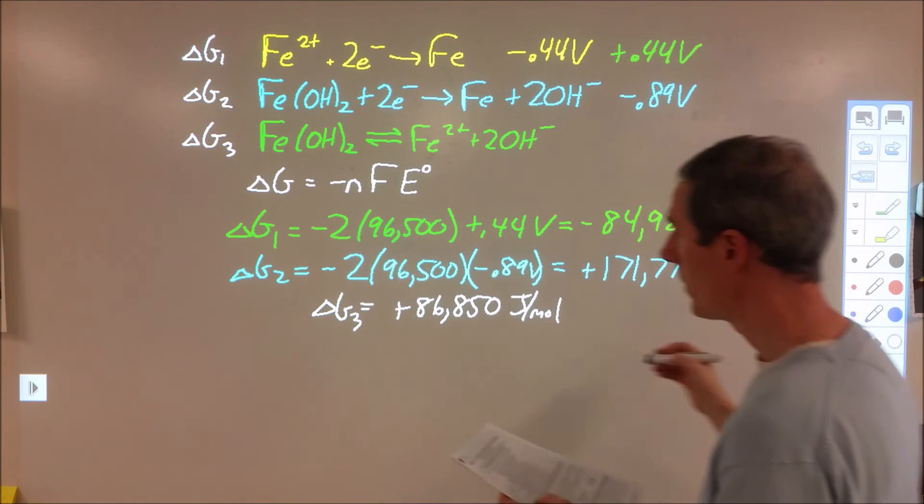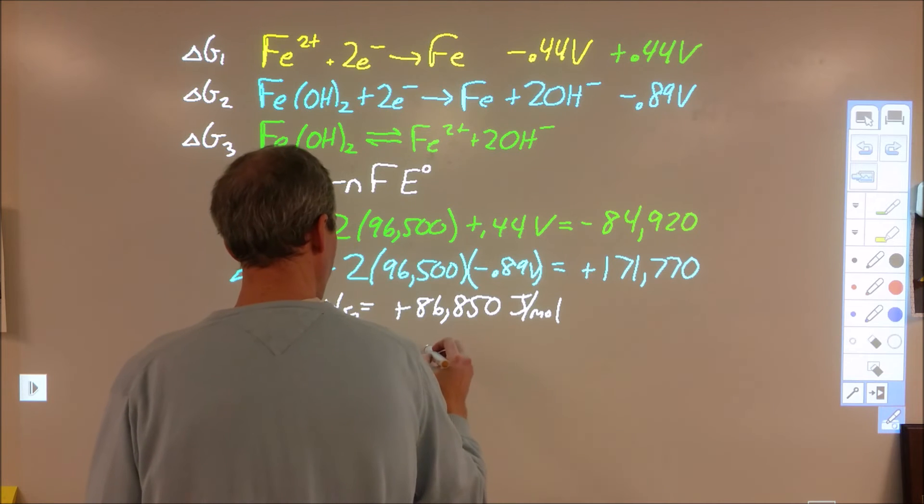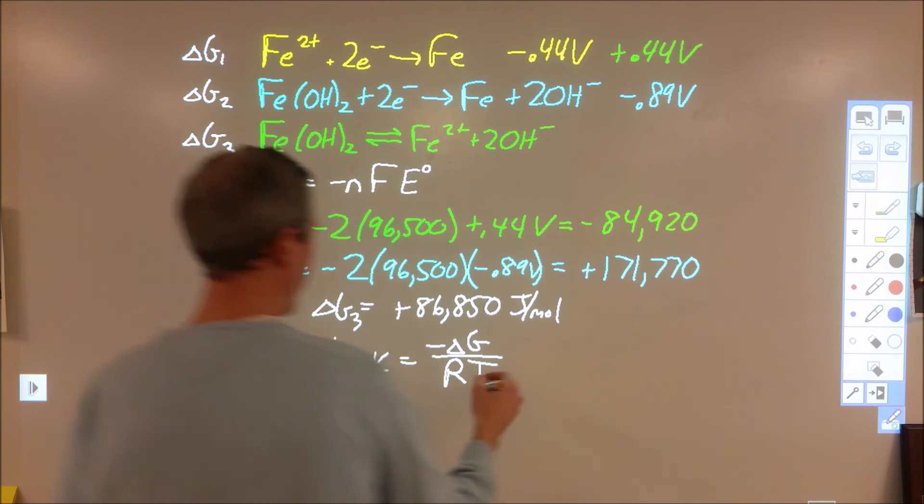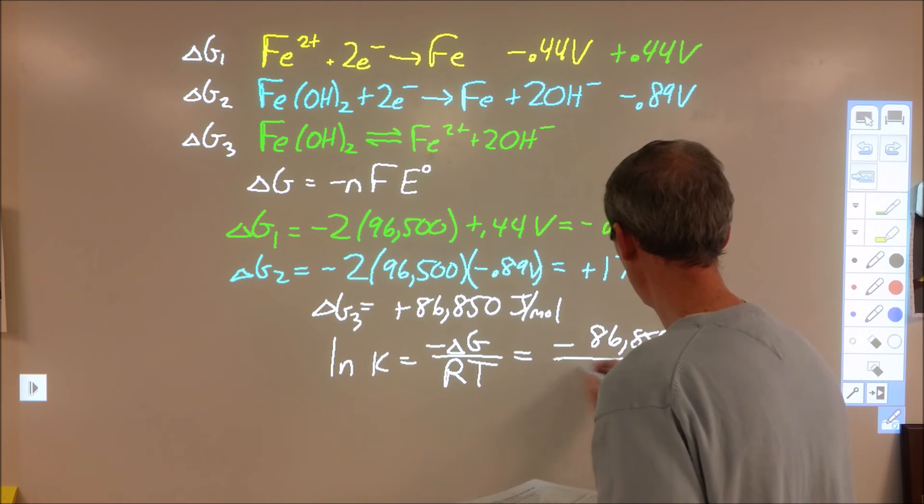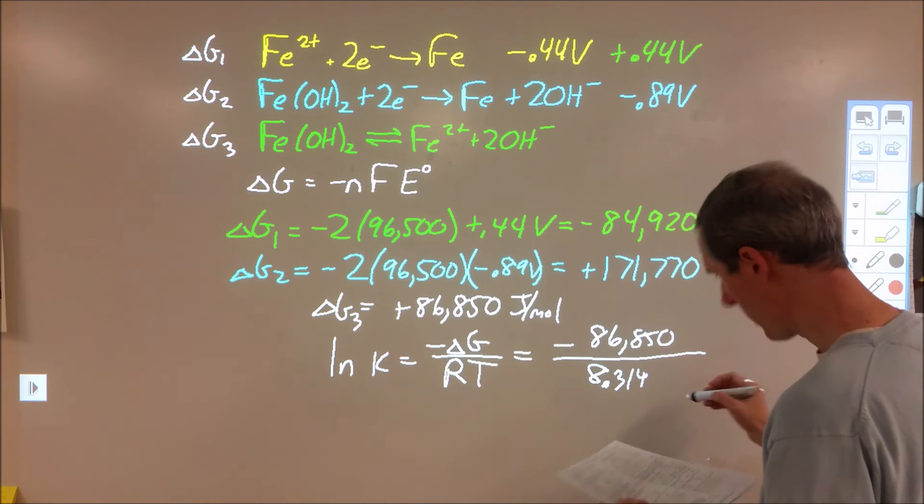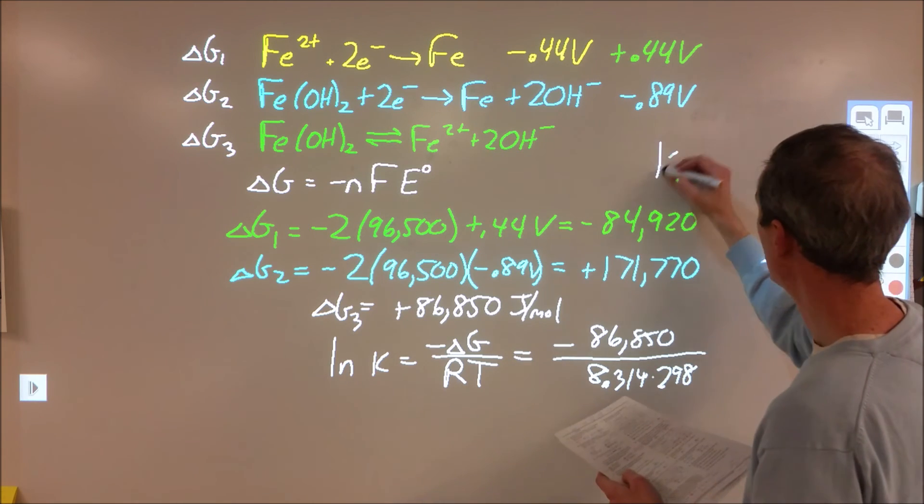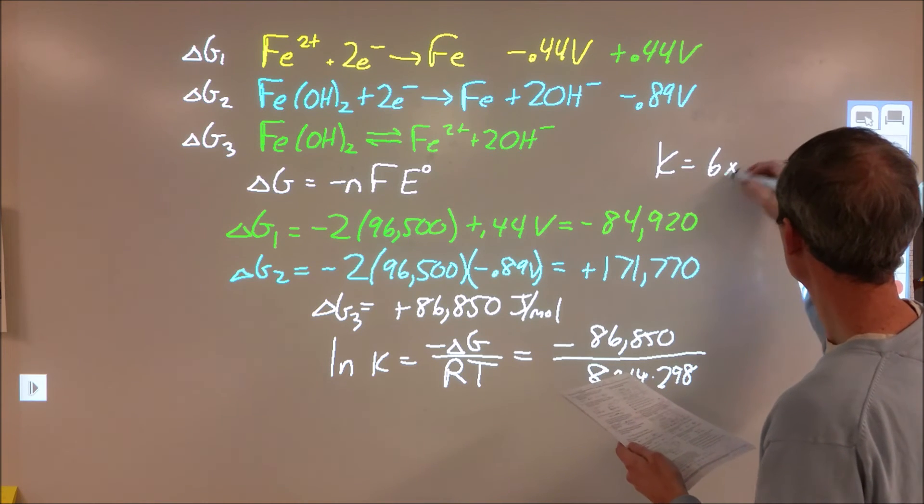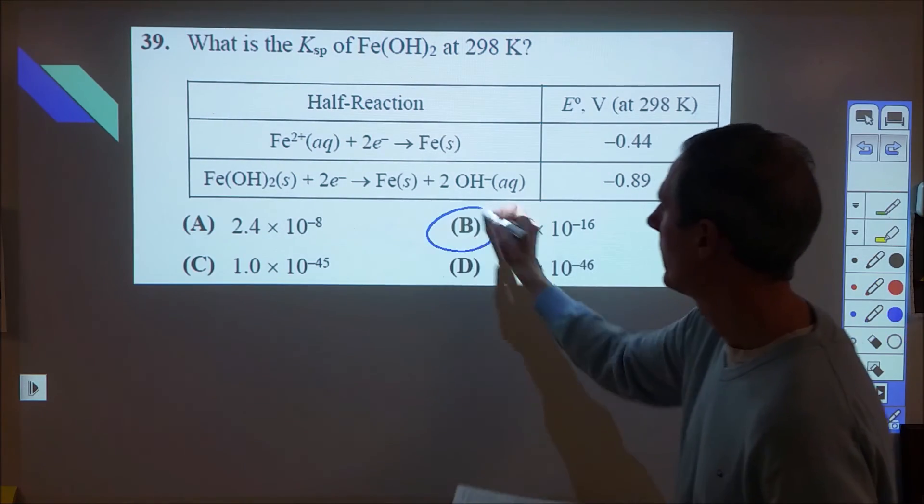So then delta G3 is just a combination between the two. So we would just add those two together and we're going to end up with a positive 86,850 joules per mole. So from there, what we then want to do is we want to figure out what the equilibrium constant is. So to do that, we're going to do natural log of the equilibrium constant is equal to negative delta G over RT. And for that, we're going to plug in our negative 86,850 over 8.34 and our temperature, which I believe is 298. Yep, 298. So we go ahead and plug all of this in. I'm going to do E to that power. We get our equilibrium constant to be 6 times 10 to the negative 16. And from all of that, we can go through and figure out what our choices be.